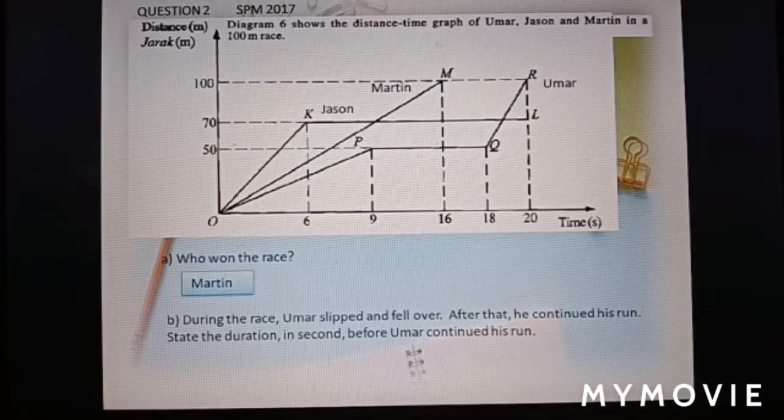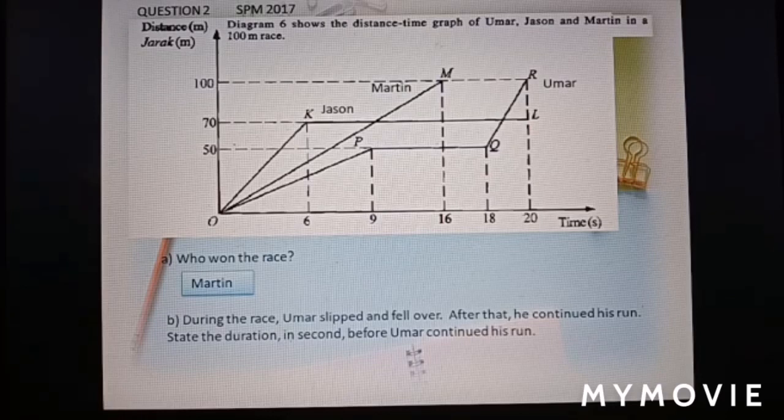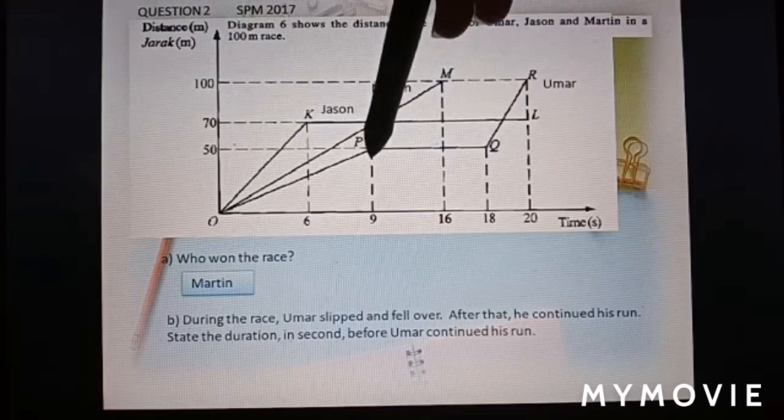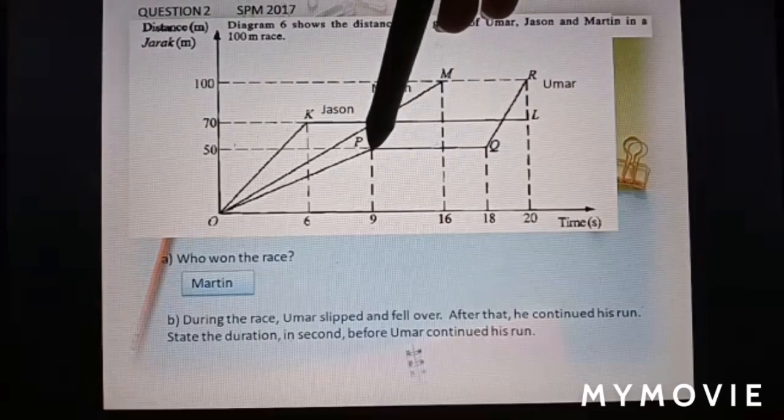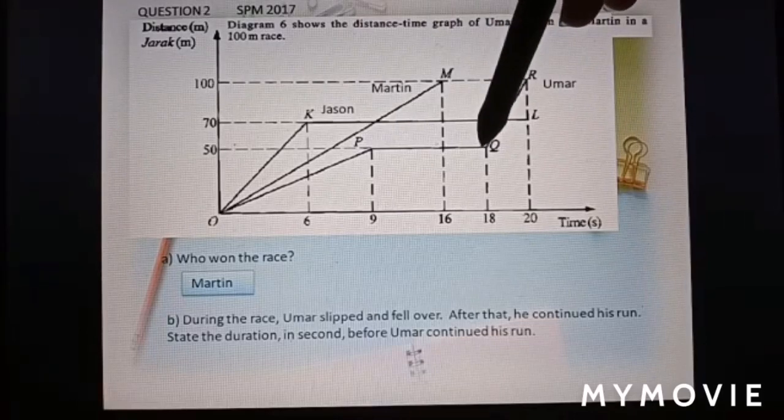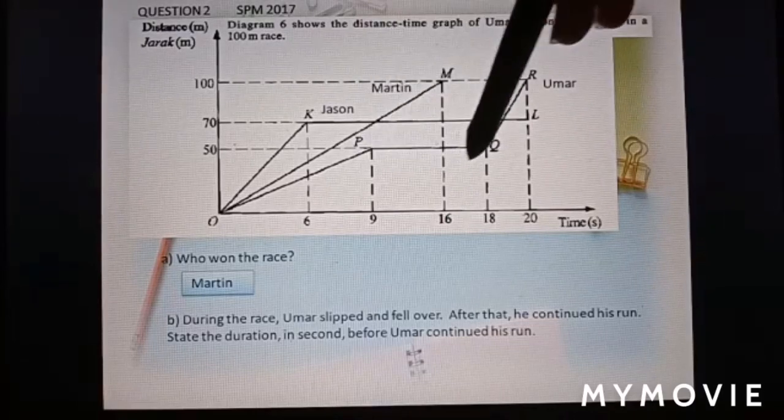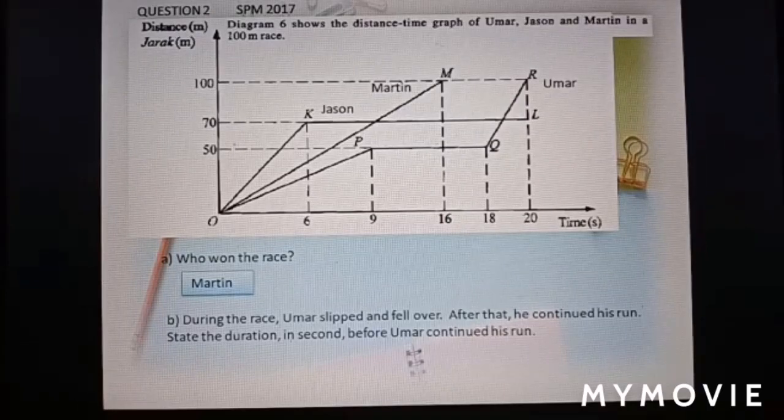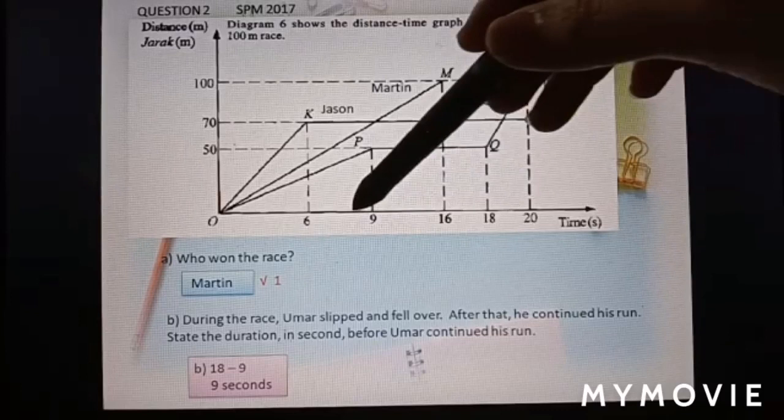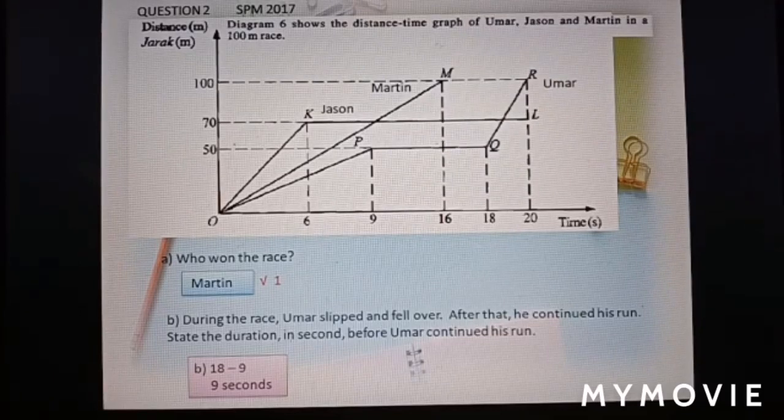Part B. During the race, Umar slipped and fell over. After that, he continued his run. State the duration in seconds before Umar continued his run. Umar is here. Okay, at this point, he slipped and fell over. So, stop for a while. So, now we need to find the duration here. So, 18 minus 9 equal to 9 seconds.